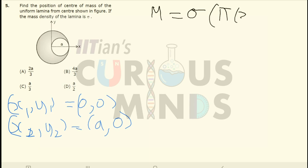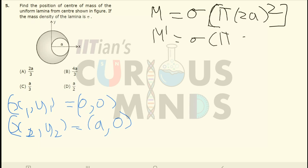The area of the larger circle is equal to π into (2a)², and the mass of the smaller circle m dash is equal to σ into π into a². When I substitute the values, σ, π, and a² all get cancelled out, giving m dash equal to m divided by 4.